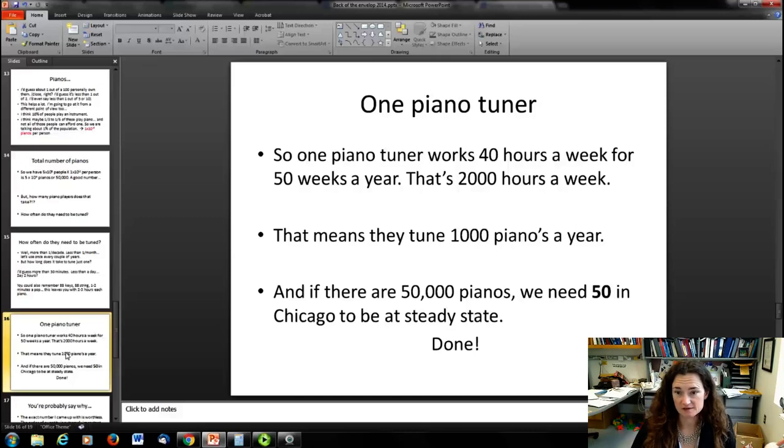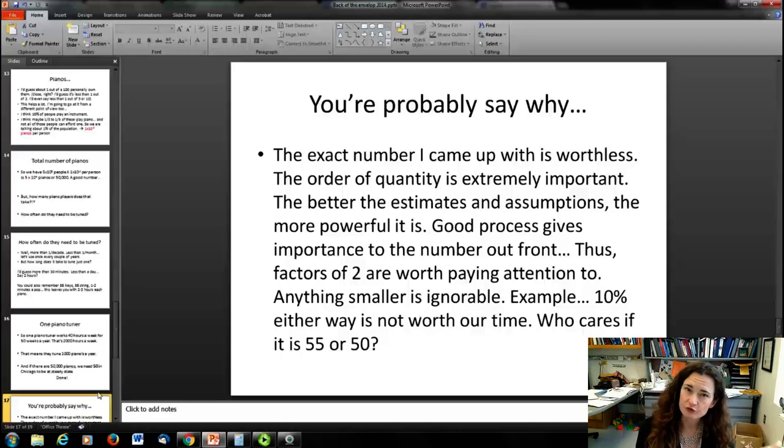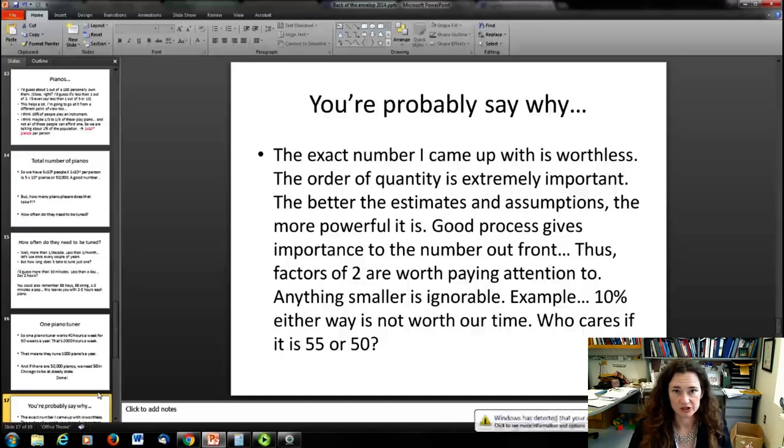So that's our estimate: 50 piano tuners in a city like Chicago. Now the exact number I came up with is totally not important. The order of magnitude, the quantity, that's what's important. That would be important for buying instrumentation or for an experiment. The better you do at your estimates and assumptions, the more powerful it is. Factors of 2 maybe you want to think about, but a 10% difference is totally not so important. Who cares if I said 50 piano tuners and it's actually 55 or 45, or even 40? What difference does that make? 50 is a pretty good guess.